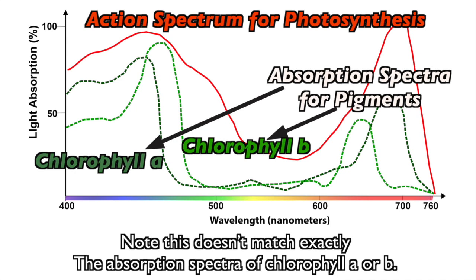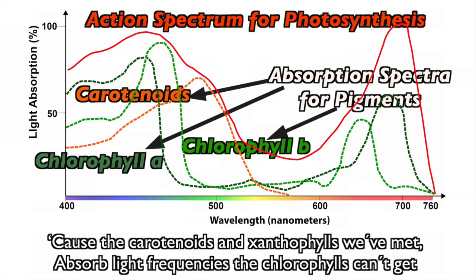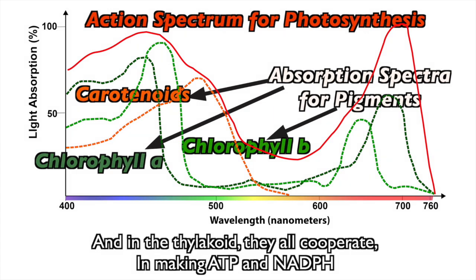Note this doesn't match exactly the absorption spectra of chlorophyll A or B, because the carotenoids and xanthophylls we've met absorb light frequencies the chlorophylls can't get. And in the thylakoid, they all cooperate in making ATP and NADPH.